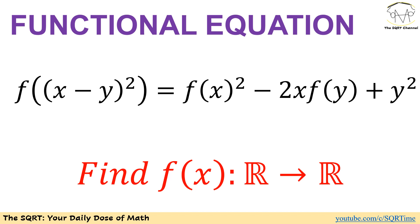For this particular problem that we are trying to solve here, we have f of (x minus y) to the power of 2 is equal to f of x to the power of 2 minus 2x times f of y plus y to the power of 2. We are going to find all functions from real numbers to real numbers that satisfy this equation.